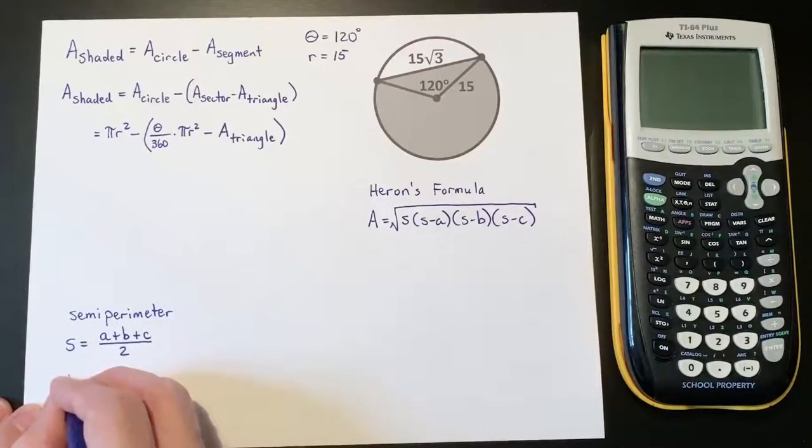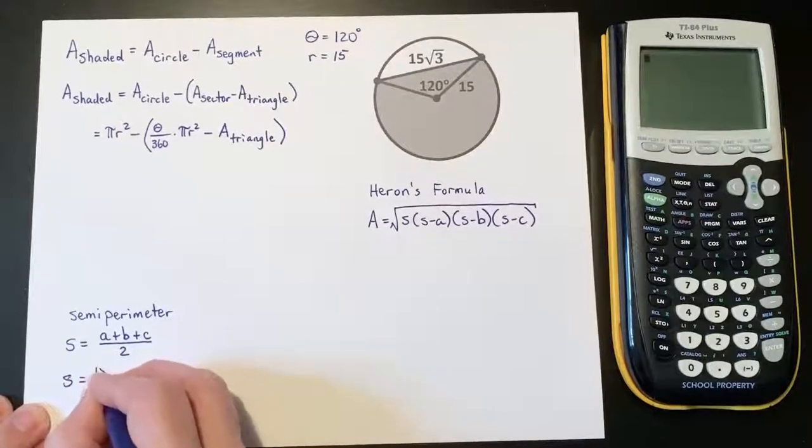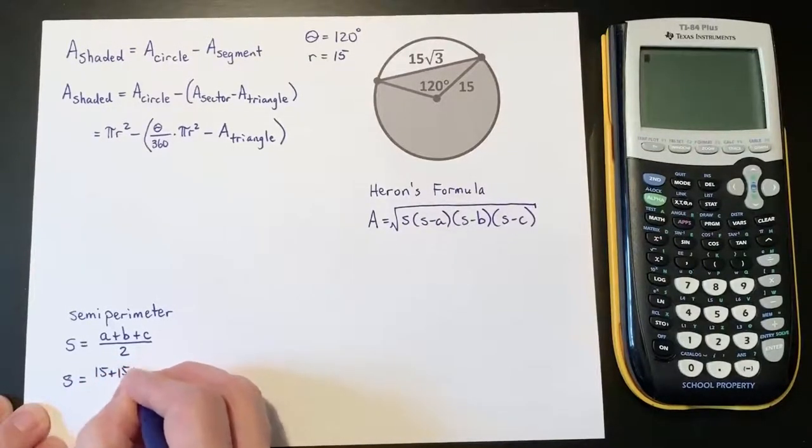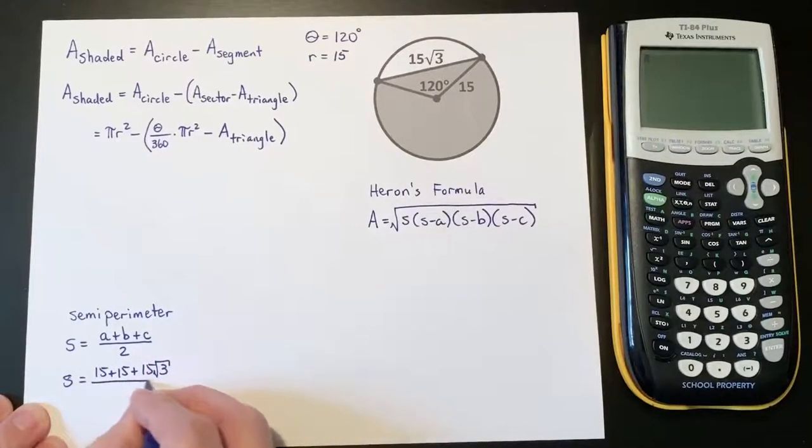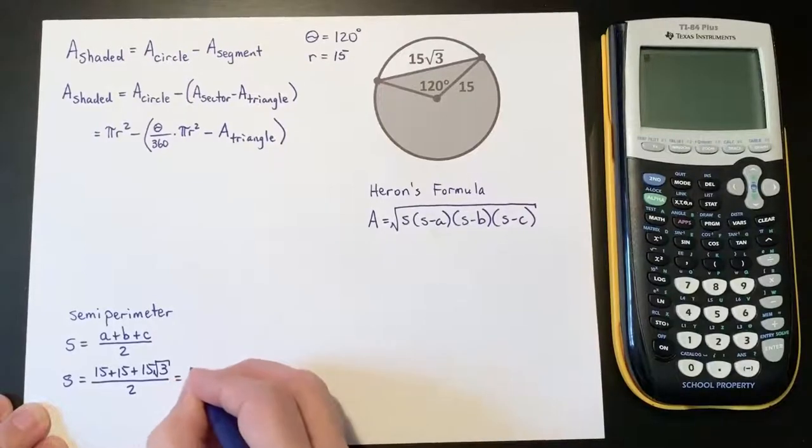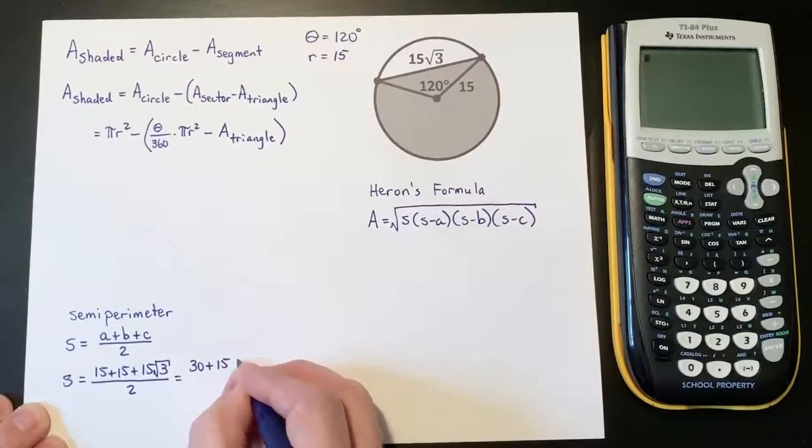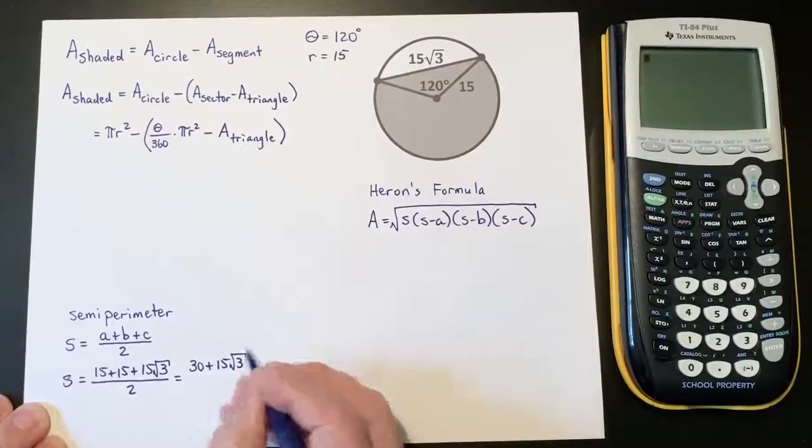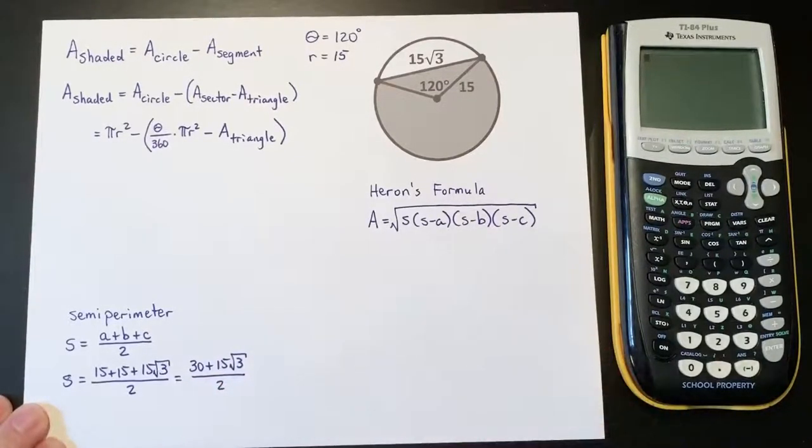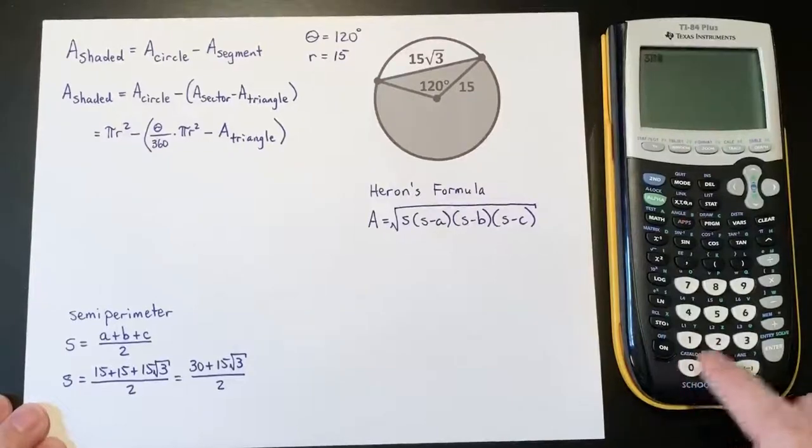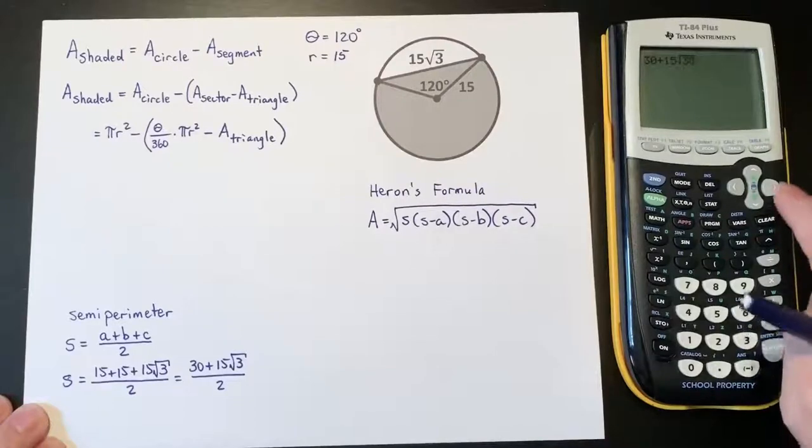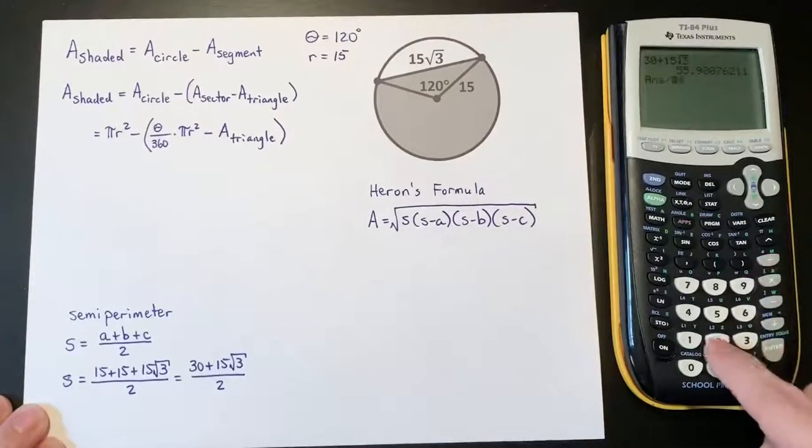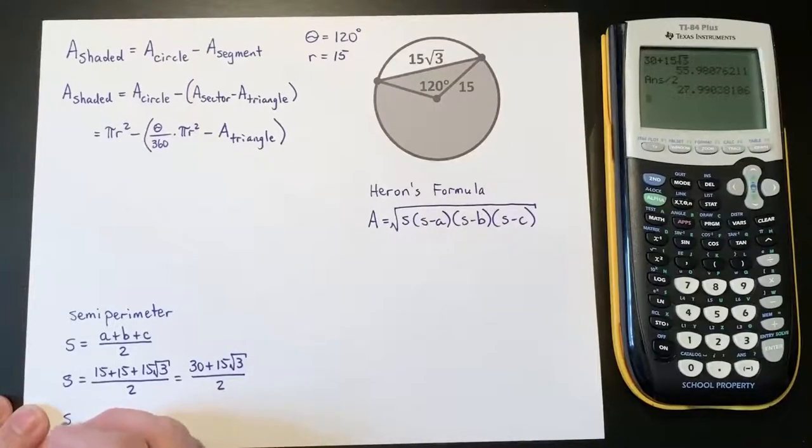So if we do that we get (15+15+15√3)/2, which is equal to (30+15√3)/2. If we type that in, we get 30 plus 15√3 and then divide that by 2, and we get about 27.99.